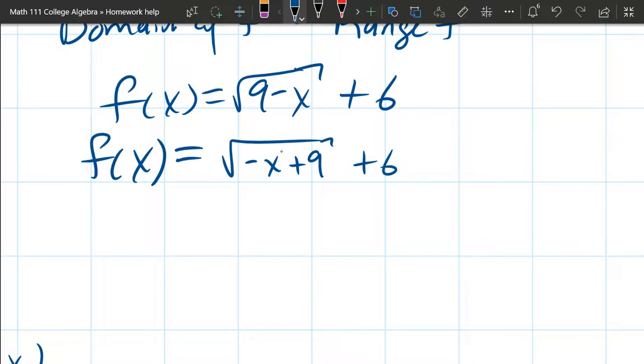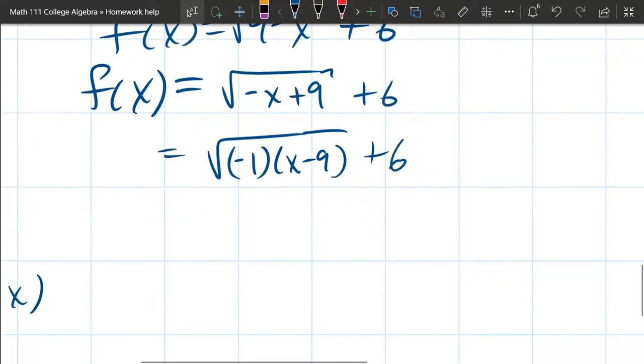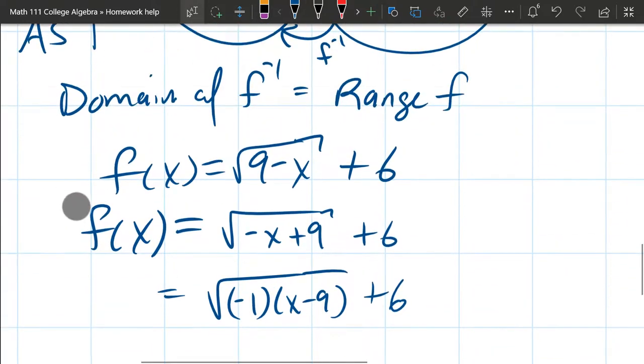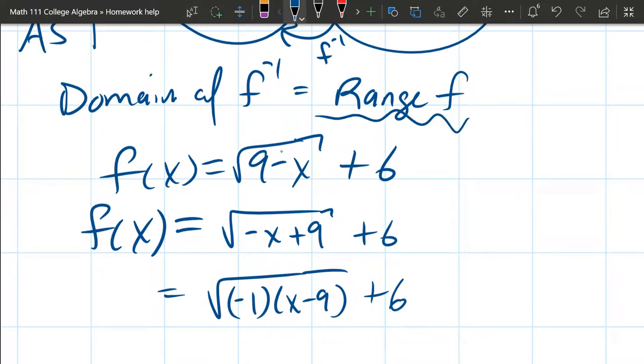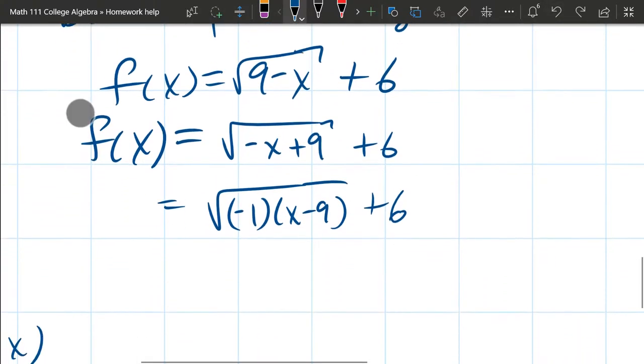I will factor the negative one out. And from here, the actual horizontal transformations are not important because I really want to know about the outputs, the y values of this function. But just for completeness, we'll look at the horizontal transformations.